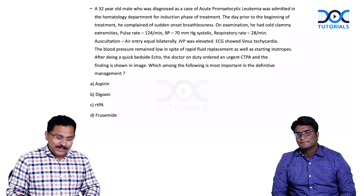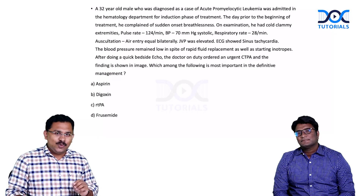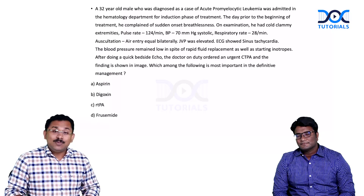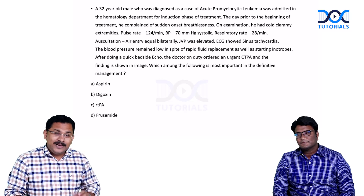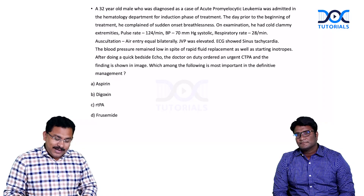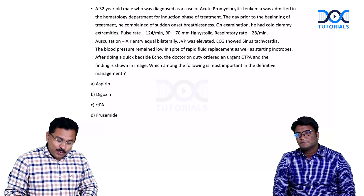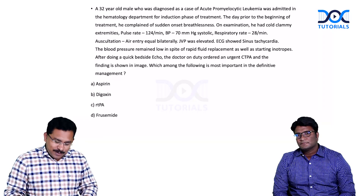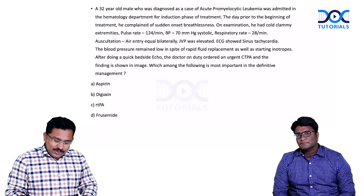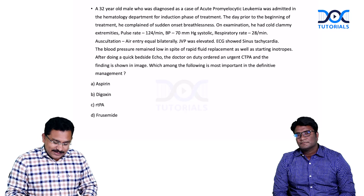The case scenario is that of a 32-year-old male who was diagnosed as a case of acute promyelocytic leukemia and he was admitted in the hematology department for the induction phase of treatment. The day prior to the beginning of treatment, he complained of sudden onset breathlessness. On examination, he had cold clammy extremities with a pulse rate of 124, blood pressure of 70 mm systolic, respiratory rate of 28 per minute, auscultation showed air entry equal bilaterally, and the JVP was elevated.